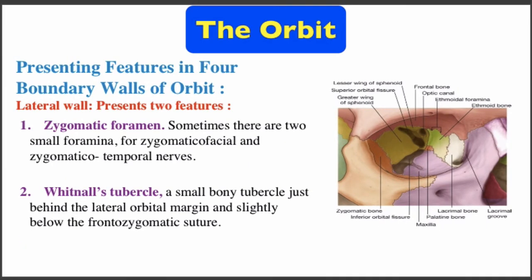The lateral wall presents two features. First: the zygomatic foramina — sometimes there are two small foramina for the zygomaticofacial and zygomaticotemporal nerves. Second: Whitnall's tubercle, a small bony tubercle just behind the lateral orbital margin and slightly below the frontozygomatic suture.